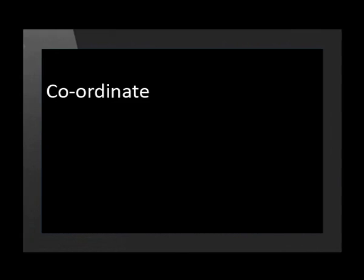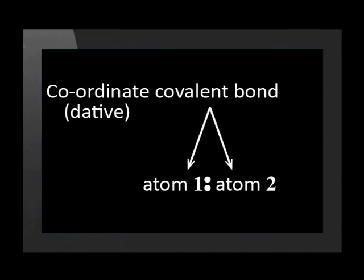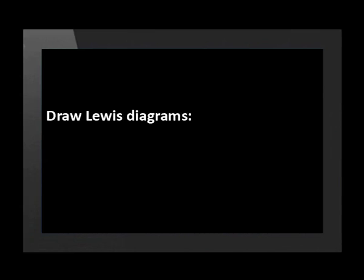This is called a coordinate or dative covalent bond, which is a bond between two atoms, where one atom supplies both the electrons involved in the bond. Let's look at two examples of coordinate bonds, the ammonium ion and the hydronium ion.